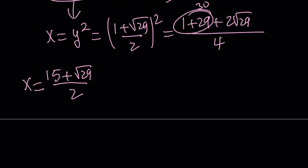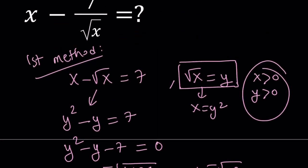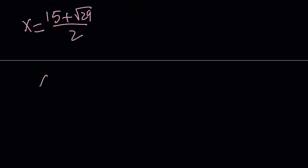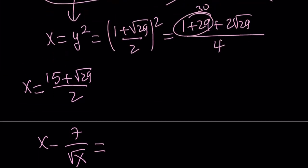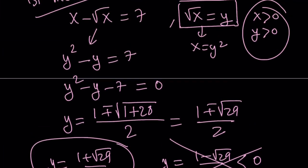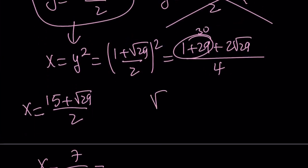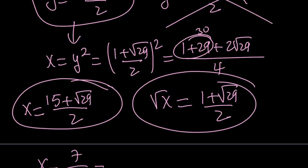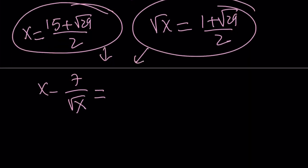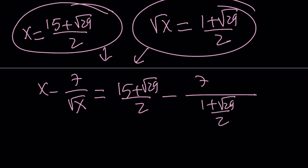All right, great. So we got the x value. What are we supposed to evaluate? We're supposed to evaluate x minus 7 over the square root of x. So I do need to find the value of x minus 7 divided by the square root of x. What is the square root of x? Do I know that? Yes. I do know the square root of x because that's equal to y. So the square root of x is 1 plus root 29 over 2. And this is the value of x and this is the square root of x. And I can just go ahead and plug those in here. So x is equal to 15 plus root 29 over 2 minus 7 divided by square root of x, which is 1 plus root 29 over 2.